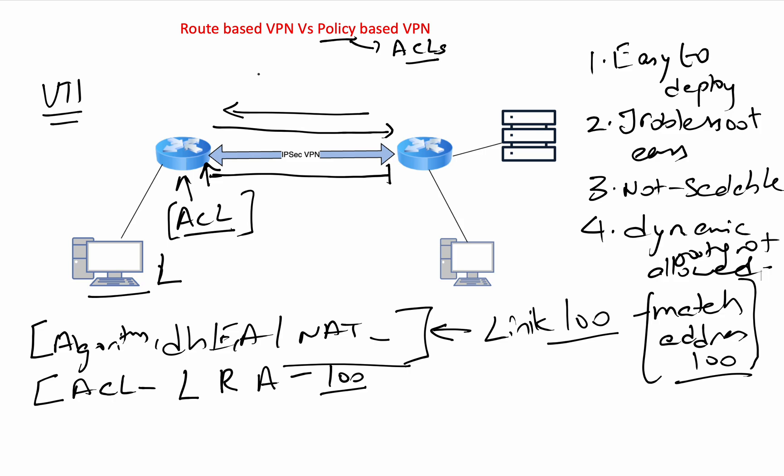Ultimately it depends on the administrator and their needs. If you're a small business owner or new to the networking field, a policy-based VPN will make more sense. If you're an expert with a large network, go for route-based VPN. Before troubleshooting or configuring, know your requirements and how you'll scale. In part two, I'll show you the configuration on both route-based VPNs and policy-based VPNs so you get a good understanding of both. I hope this video was helpful, thank you.